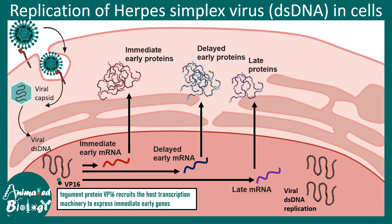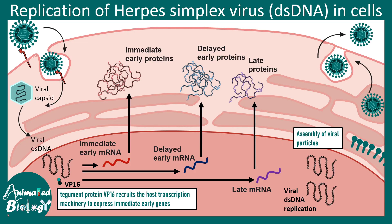The viral DNA is also replicated in the nucleus, and eventually the replicated viral genome and the proteins which are produced get packaged into a virion and it is ready to be released into the environment. This is how a double-stranded DNA virus — in this example herpes simplex virus — actually replicates.